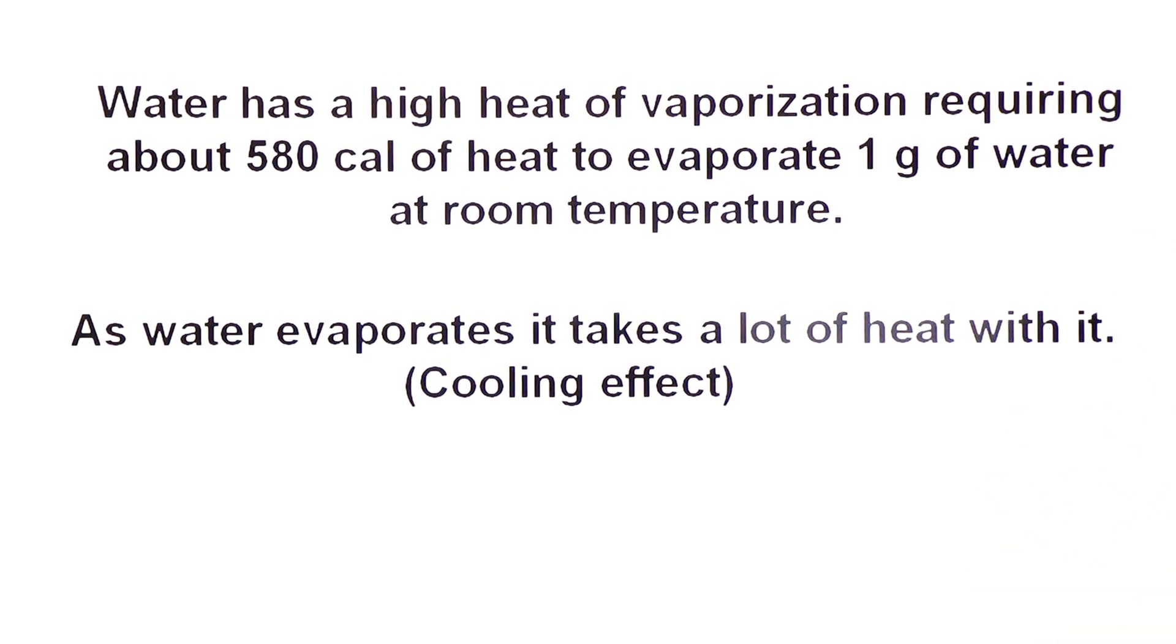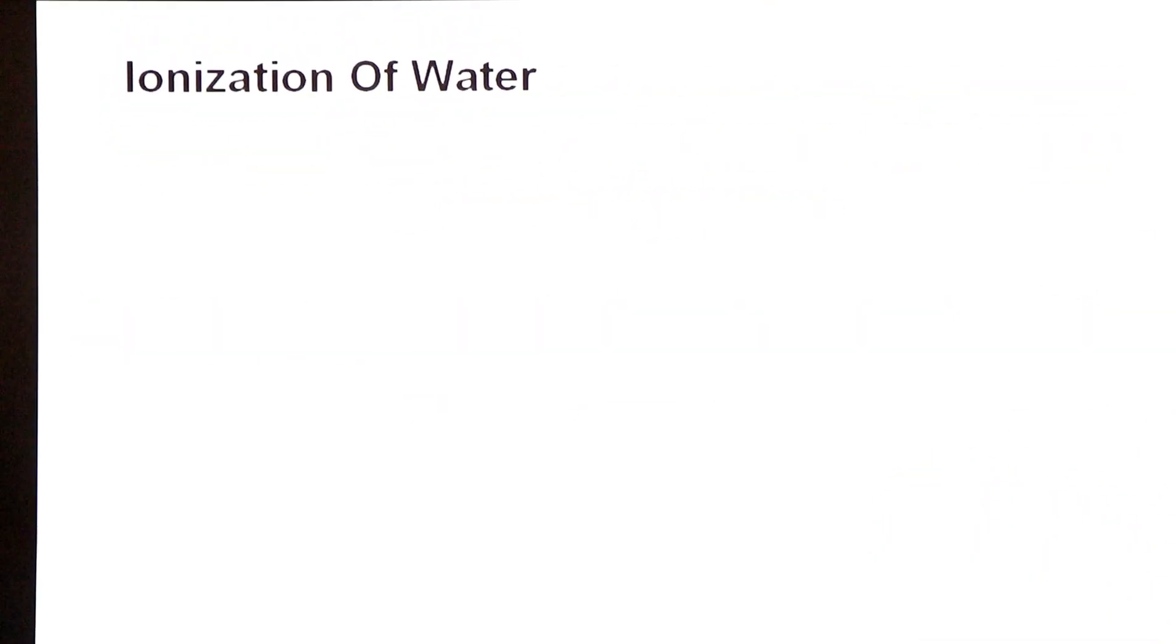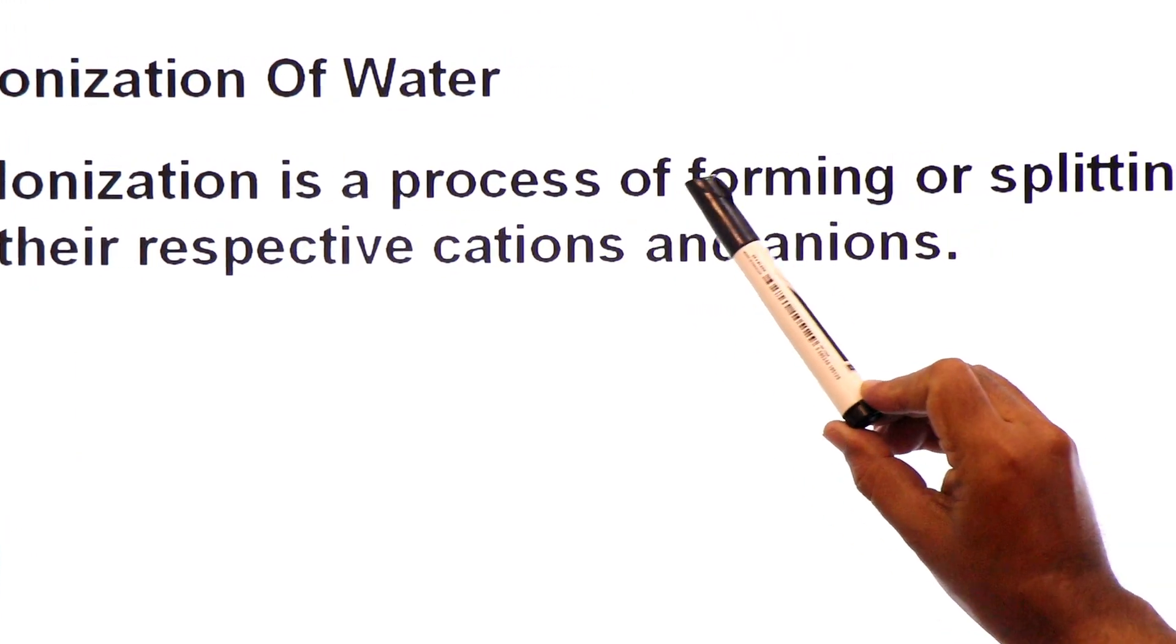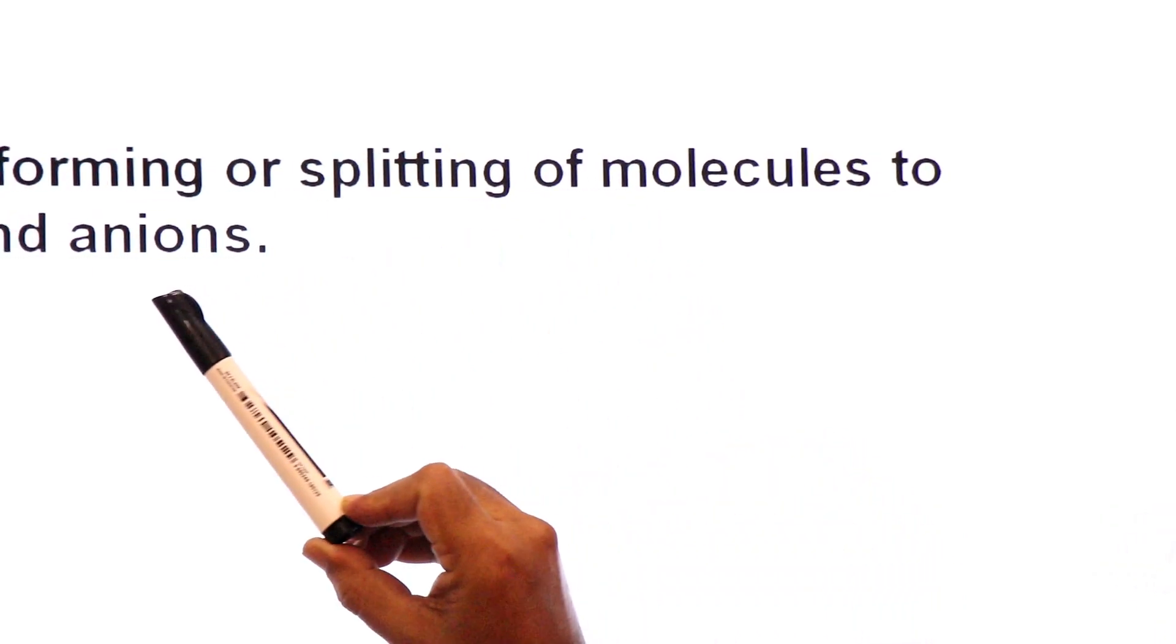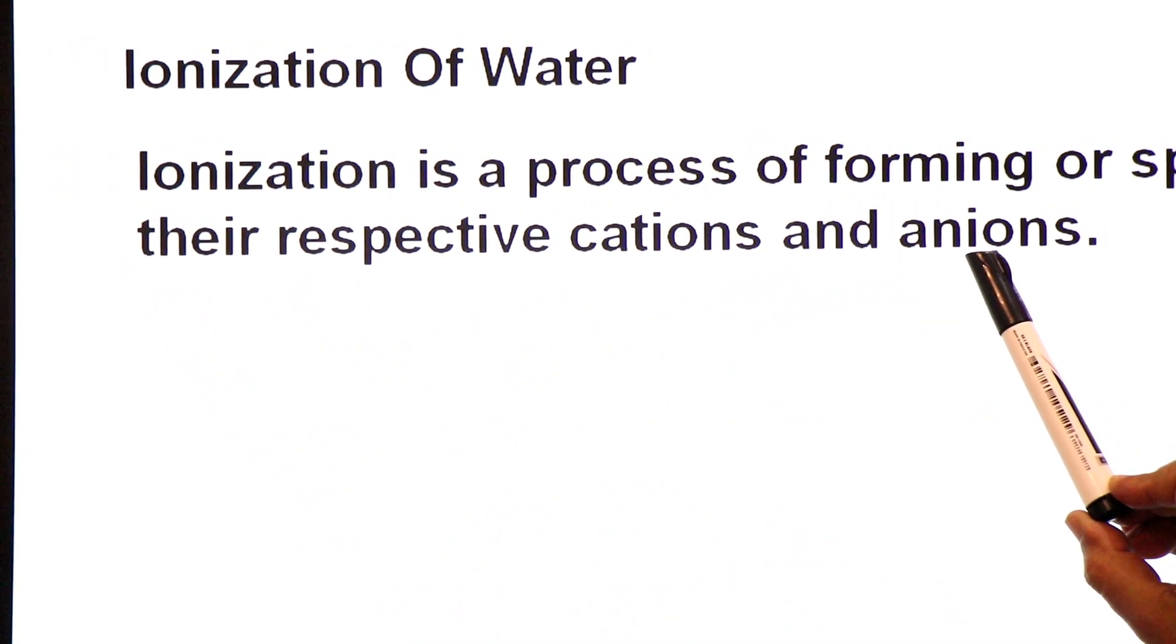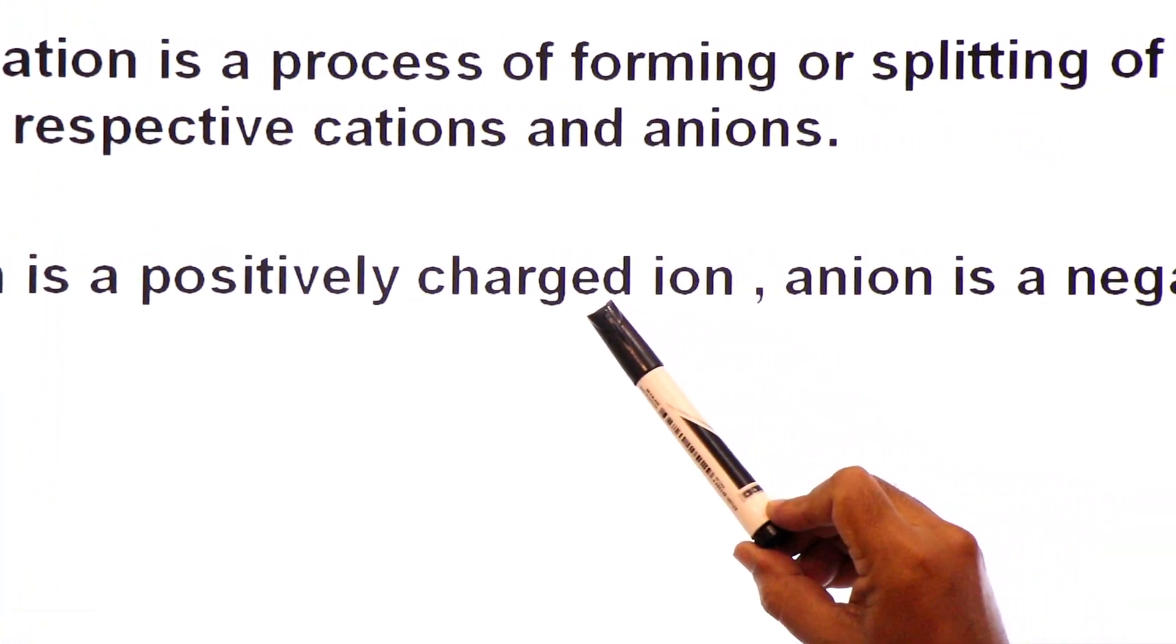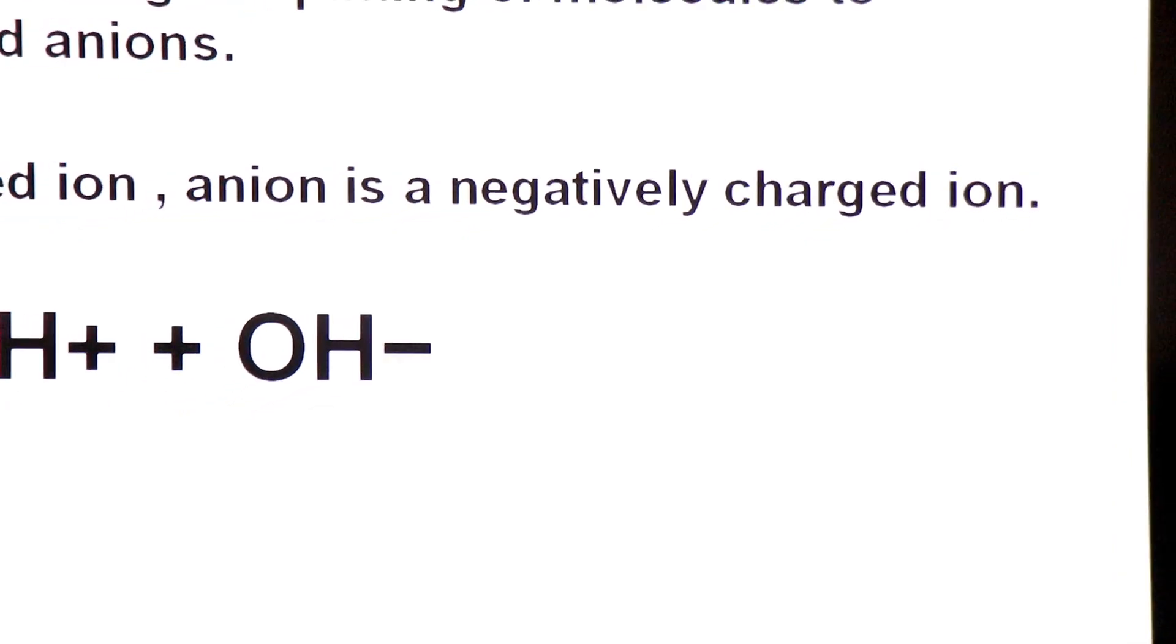What is ionization? Ionization is a process of forming or splitting of molecules to their respective cations and anions. What are cations? What are anions? Cation is positively charged ion and anion is negatively charged ion.